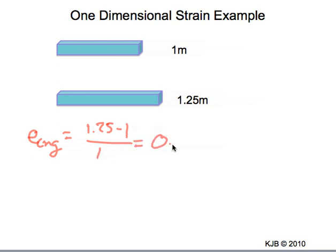And that gives us 0.25 for our strain. If we use the true strain for these two cases, for the true strain, it would be 1.25 divided by 1, and we take the natural log of those two, and that gives us, as a result, 0.22.